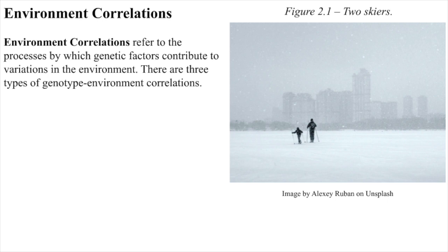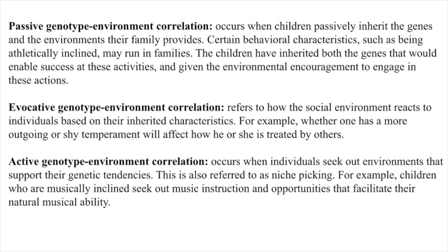Environment correlations refer to the process by which genetic factors contribute to variations in the environment. There are three types of genotype-environment correlations. Passive genotype-environment correlation occurs when children passively inherit the genes and the environments their family provides. Certain behavioral characteristics, such as being athletically inclined, may run in families. The children have inherited both the genes that would enable success at these activities and the environmental encouragement to engage in these actions.